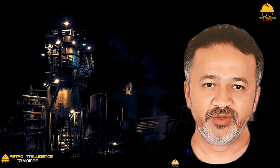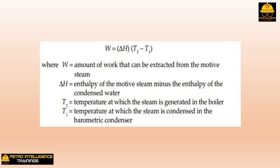It was James Watt, working alone repairing a model of a Newcomen engine, who made the big leap forward in improving the efficiency of the steam engine. The second law of thermodynamics states: W = ΔH × (T2 - T1), where W equals the amount of work extracted, ΔH equals the enthalpy of the motive steam minus the enthalpy of the condensed water, T2 equals the temperature at which steam is generated in the boiler, and T1 equals the temperature at which steam is condensed. Mr. Watt lowered T1.